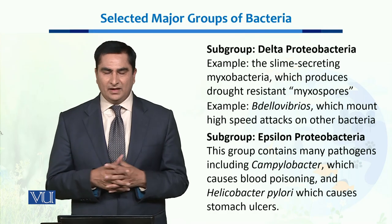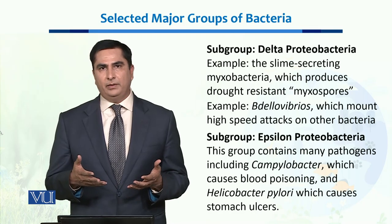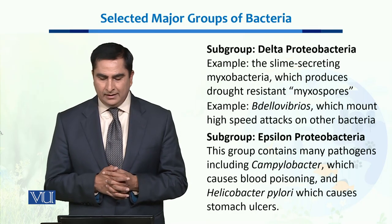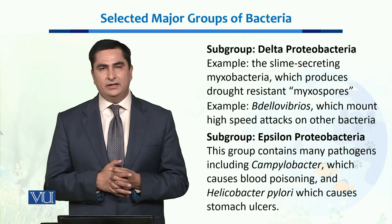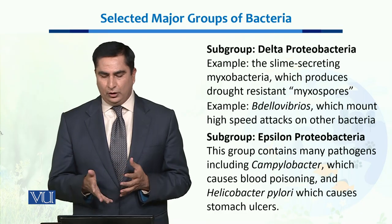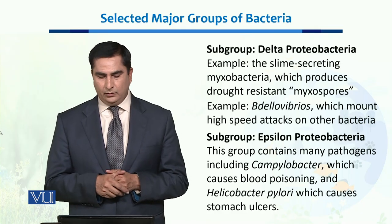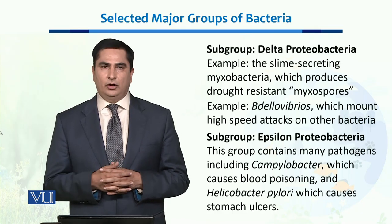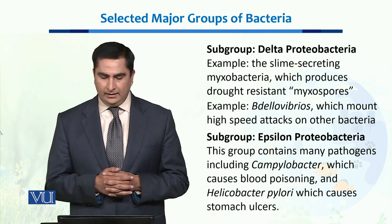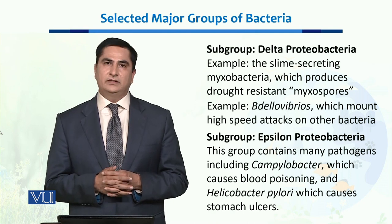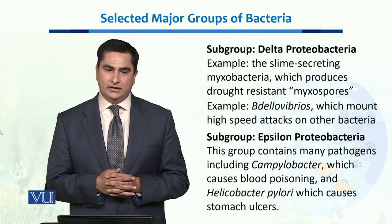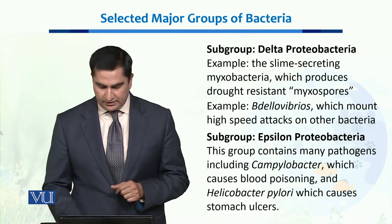Then we have the subgroup epsilon proteobacteria. This group contains many pathogens, including Campylobacter, which causes blood poisoning, and Helicobacter pylori, which causes stomach ulcers in humans.